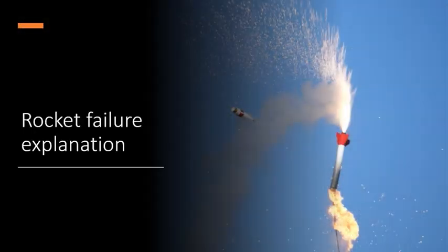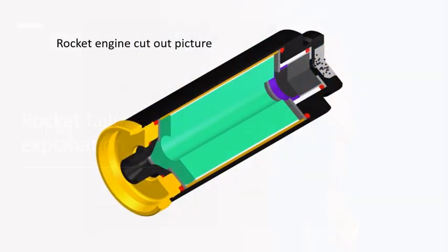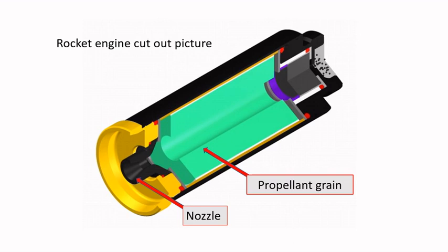Rocket failure explanation. Here is a rocket engine cut out diagram for understanding what has happened.